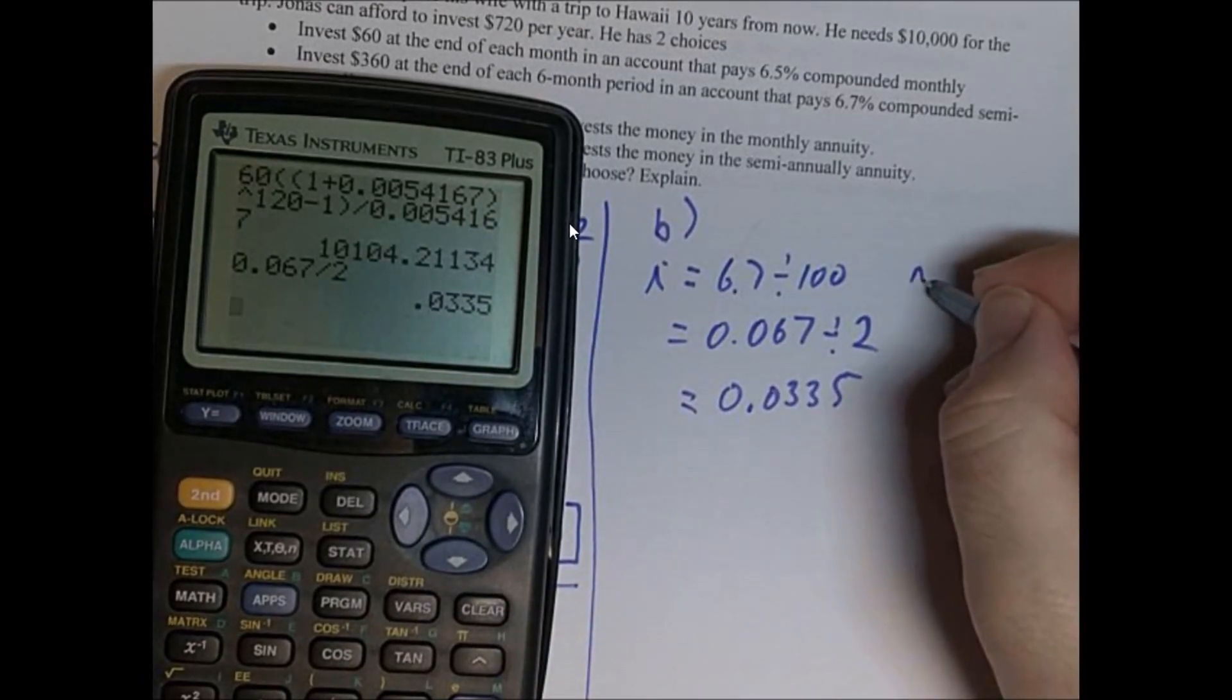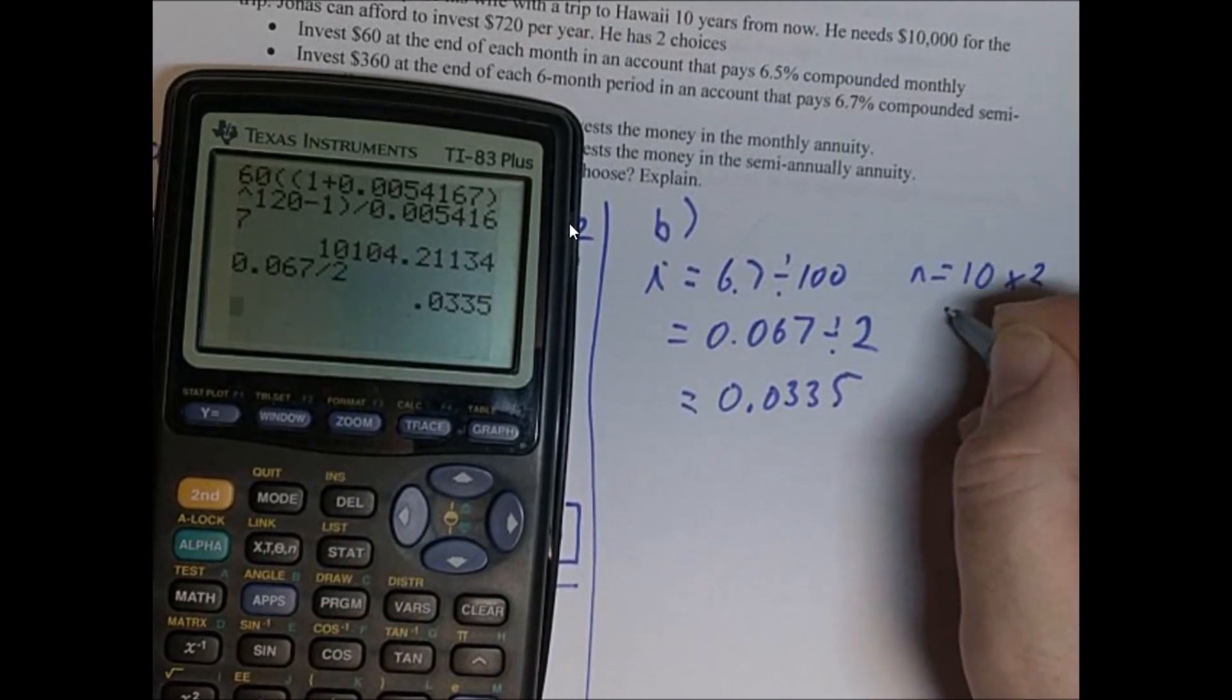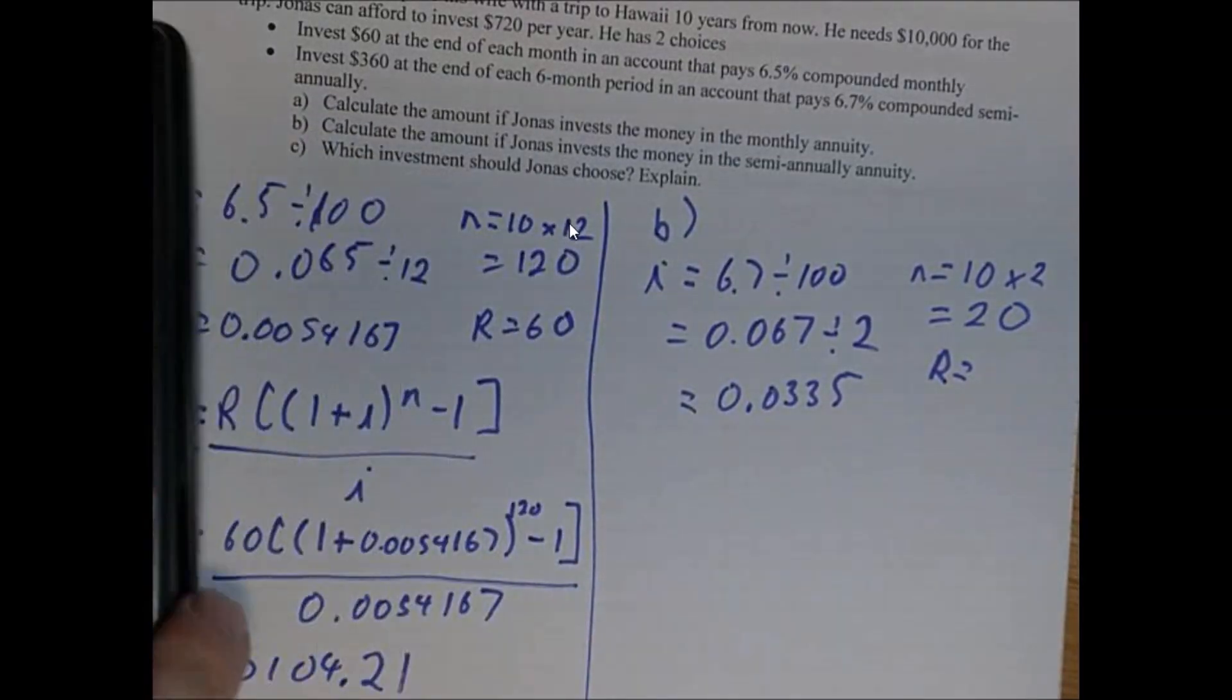Now our N's the opposite. So it's 10 years times two. Because it's semi-annually, twice a year, 20. And our payment each month. So our payment every single month is 360.